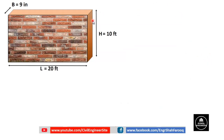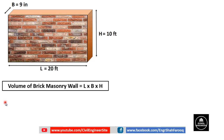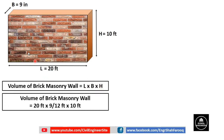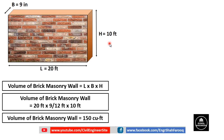To calculate the number of bricks required for this wall, first we have to calculate the volume of the wall. Volume of this brick masonry wall can be calculated using the formula: Volume = Length × Breadth × Height. Length is 20 feet, thickness is 9 inches — divide by 12 to convert to feet (since 1 foot = 12 inches) — and height is 10 feet. After calculation, the volume of the brick masonry wall is 150 cubic feet.